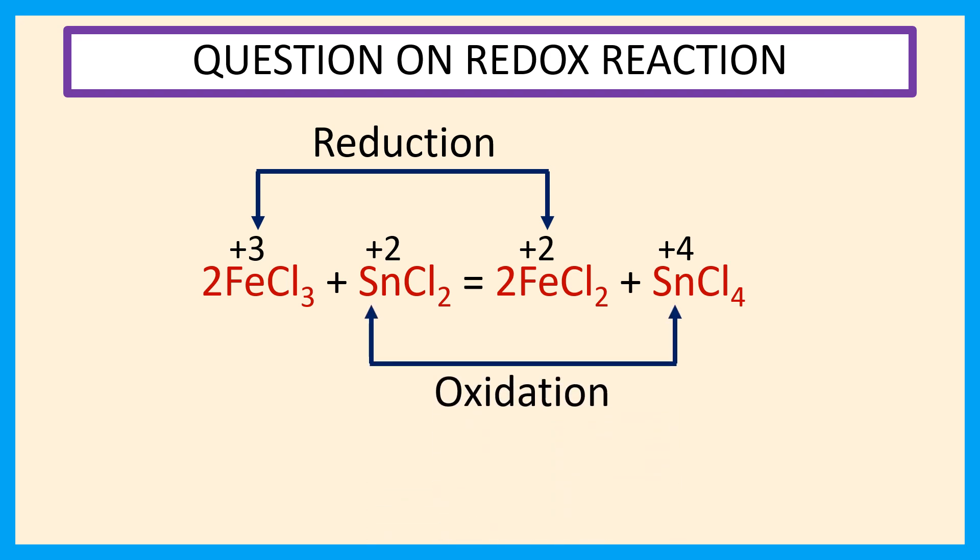In redox reaction, the reactant in which the oxidation number of an atom increases is called the reducing agent. Here oxidation number of Sn is plus 2 in SnCl2 and increases to plus 4 in SnCl4. So SnCl2 is the reducing agent.